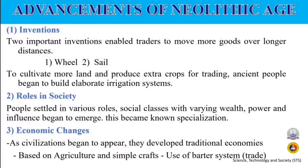Advancements during the Neolithic Age: First, inventions. Two important inventions enabled traders to move more goods over longer distances — the wheel and the sail. To cultivate more land and produce extra crops for trading, ancient people began to build elaborate irrigation systems. Second, roles in society: people settled into various roles, and social classes with varying wealth, power, and influence began to emerge.